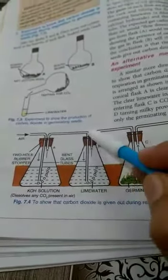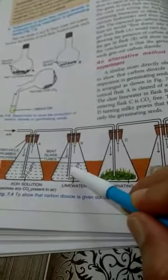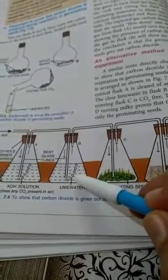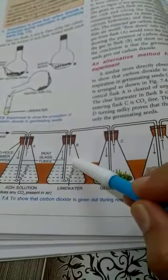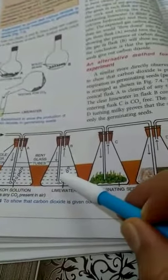This air will then move in conical flask B which is containing lime water. Because this air is devoid of carbon dioxide, the color of lime water will not change. It will not become milky.